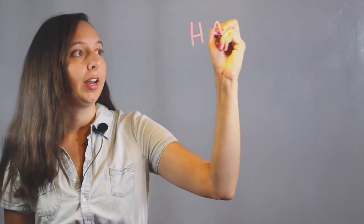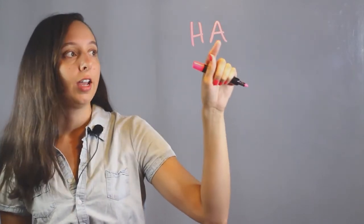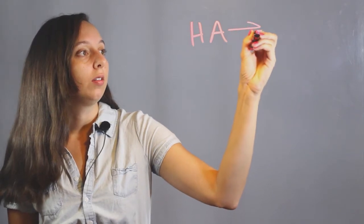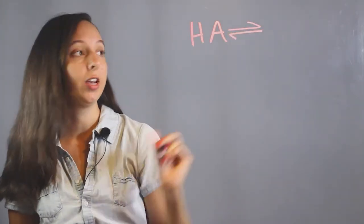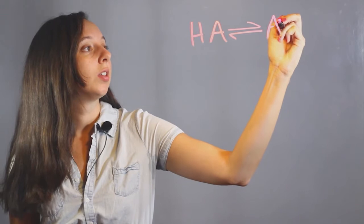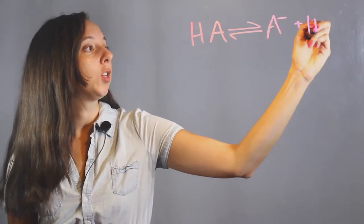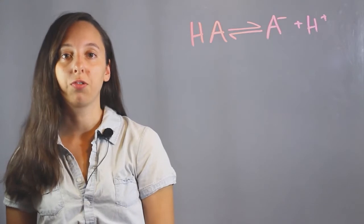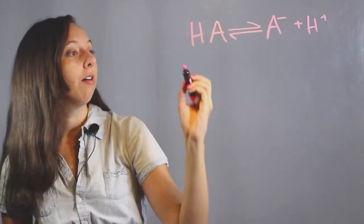So we have our acid at first and it has this extra proton here and we just have A for general acid and it will, in solution, disassociate into A- and H+.